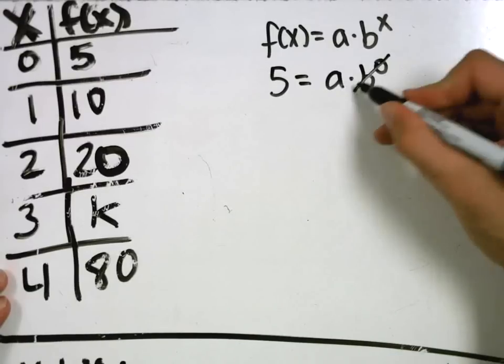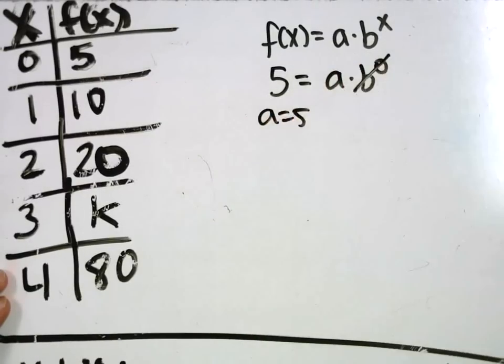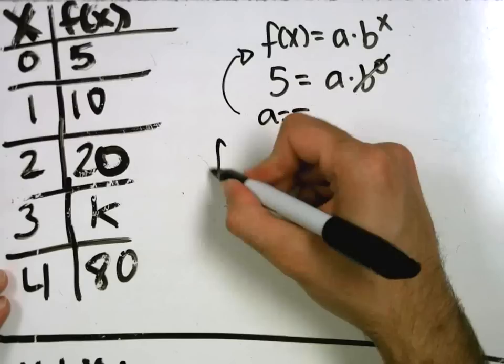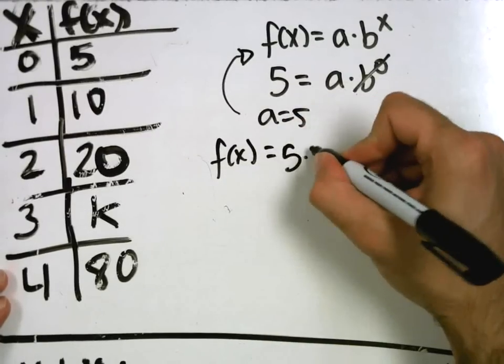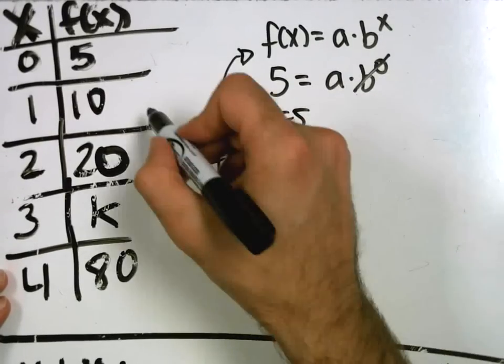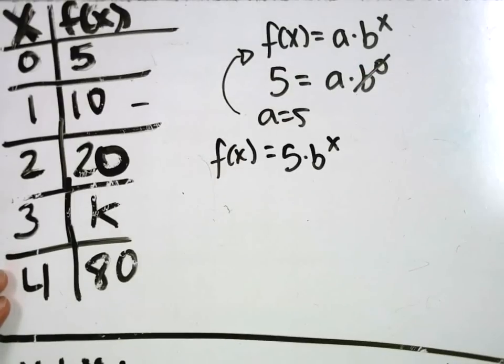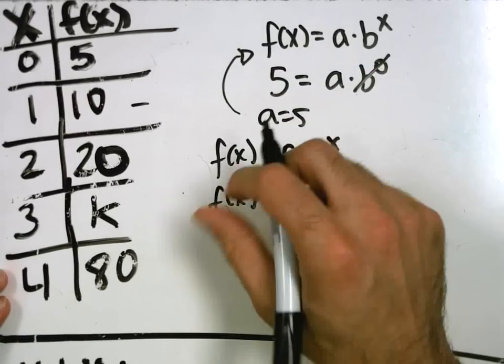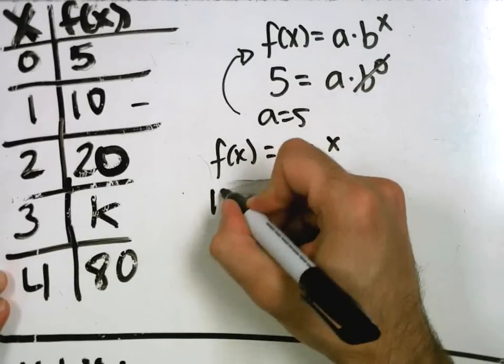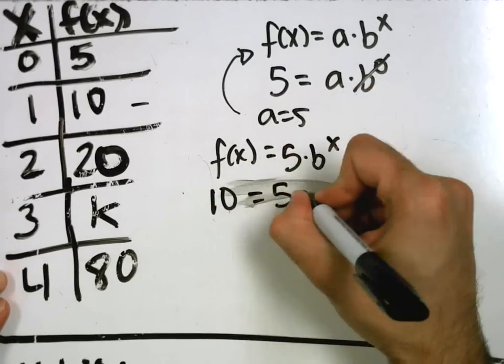We're going to plug this back into the formula. So F of X equals 5 times B to the X. Choose this point again. And we get 10 equals 5 times B to the 1. B to the 1 is B.